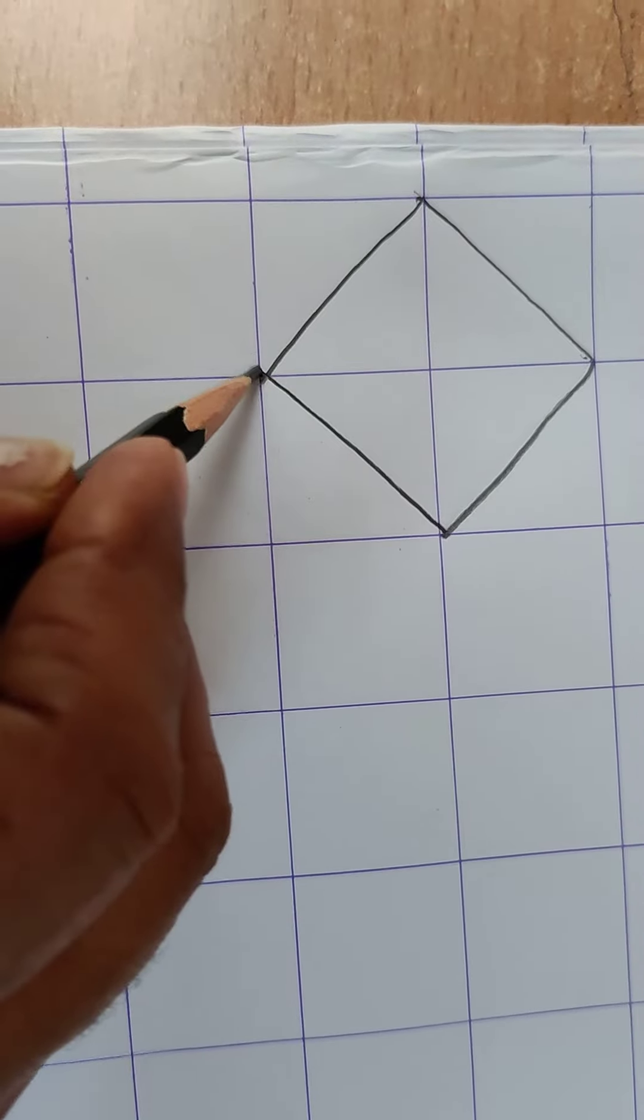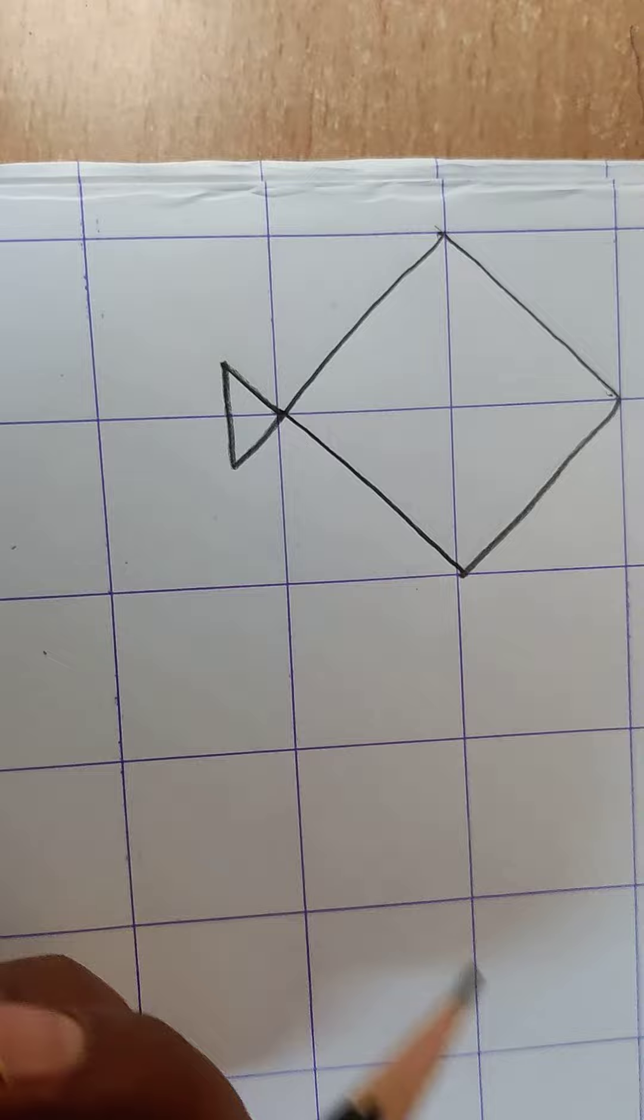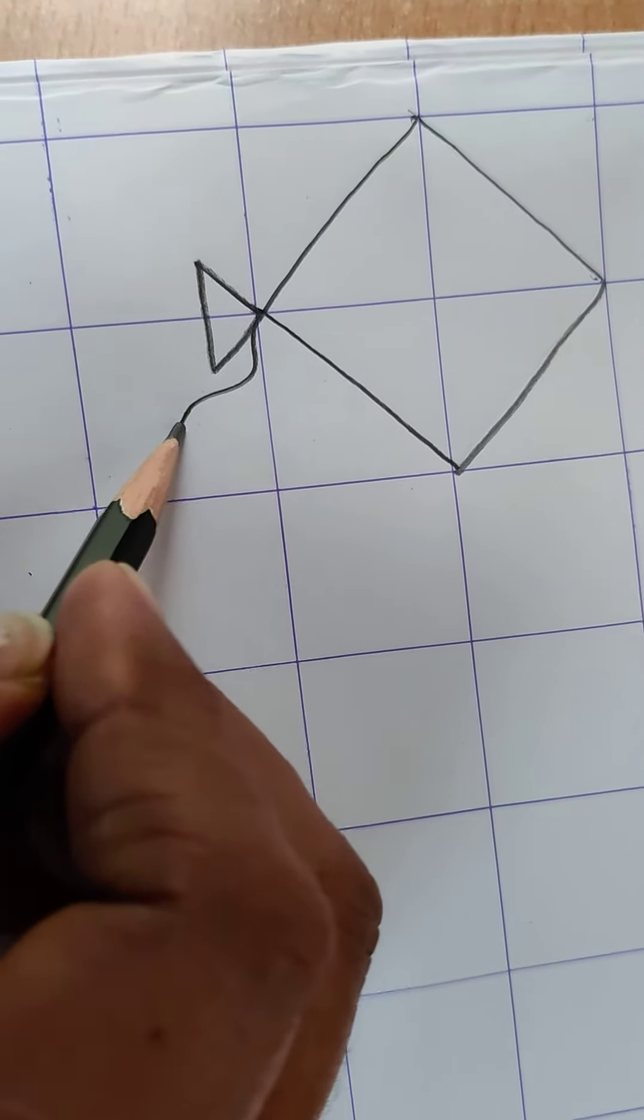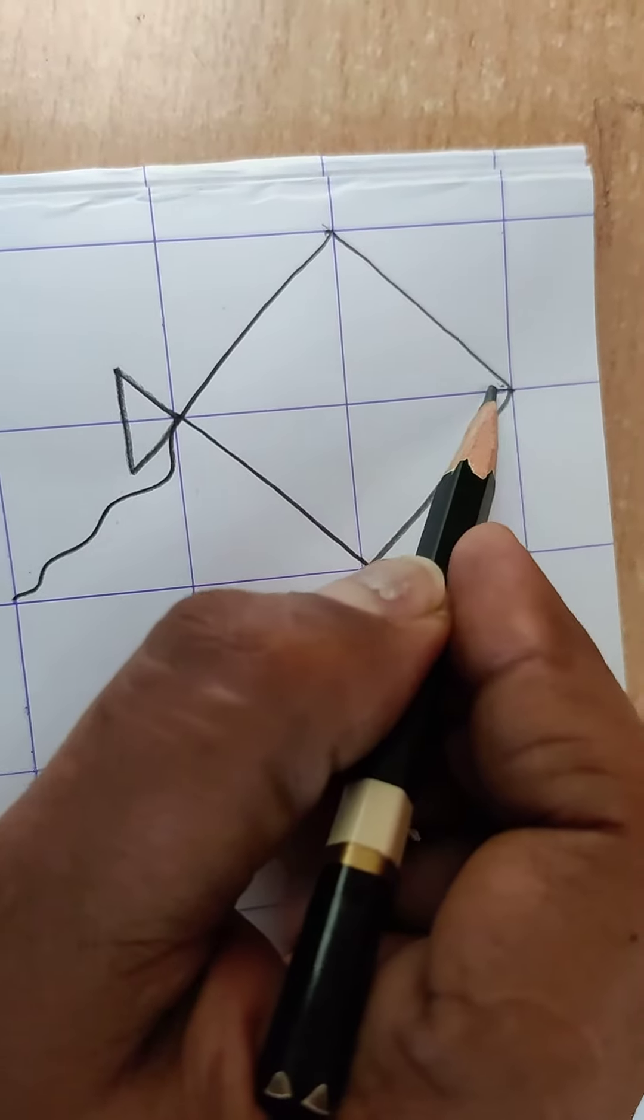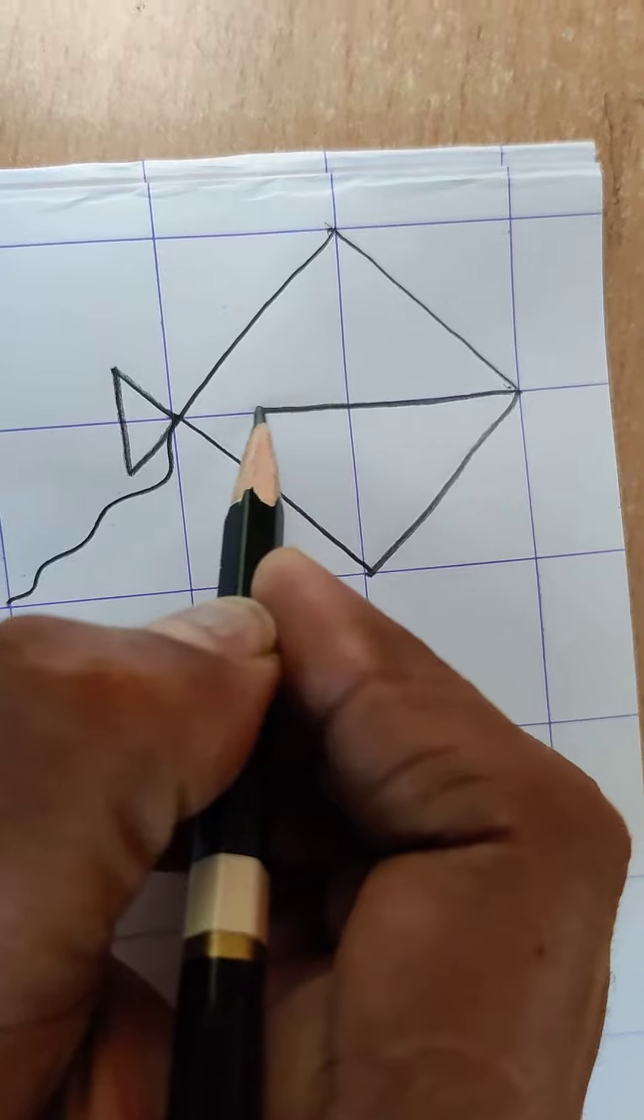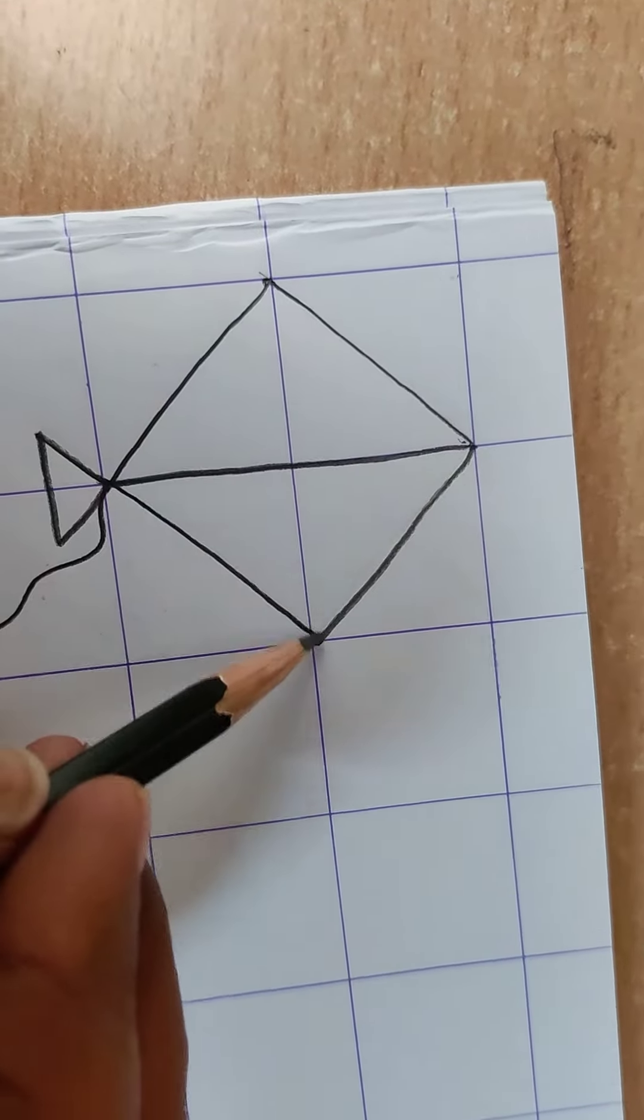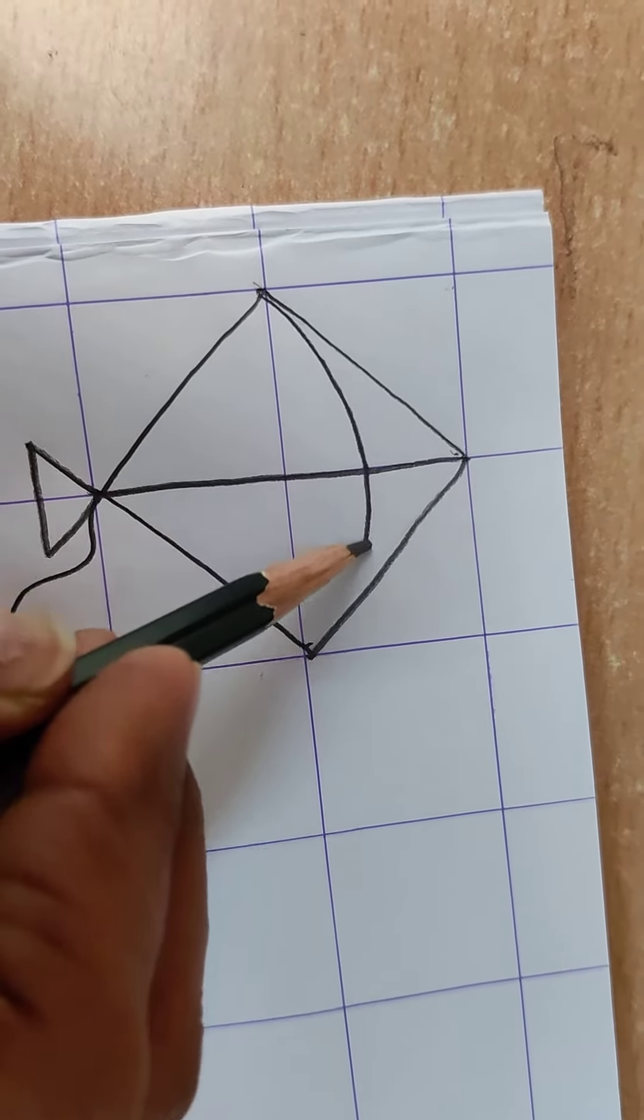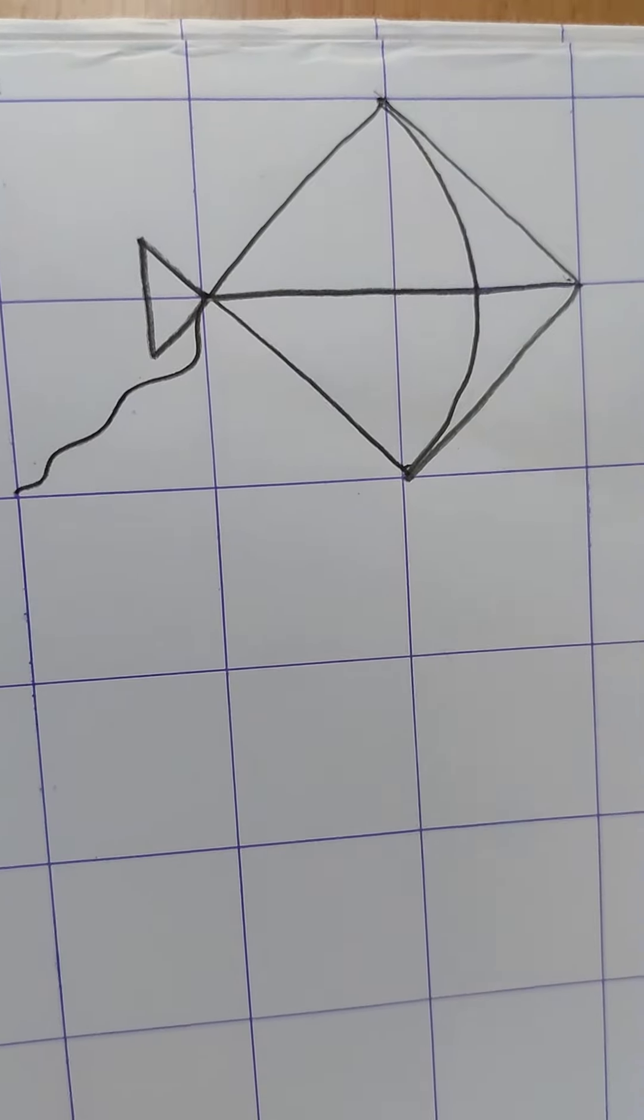Okay. Then you will make a small triangle down here and you will make a string till this corner. Okay. Now you will draw one line straight in the center and then you will join this and this point with a semi circle like this and your kite will be ready. Okay.